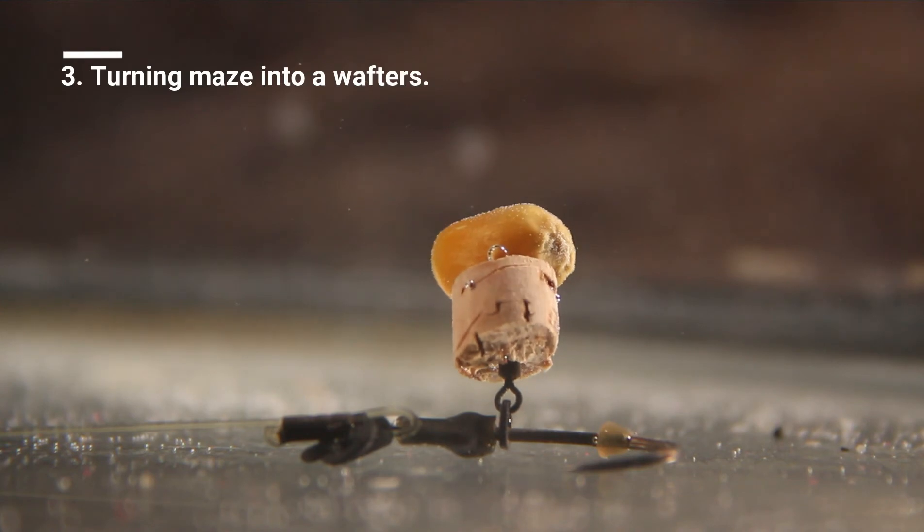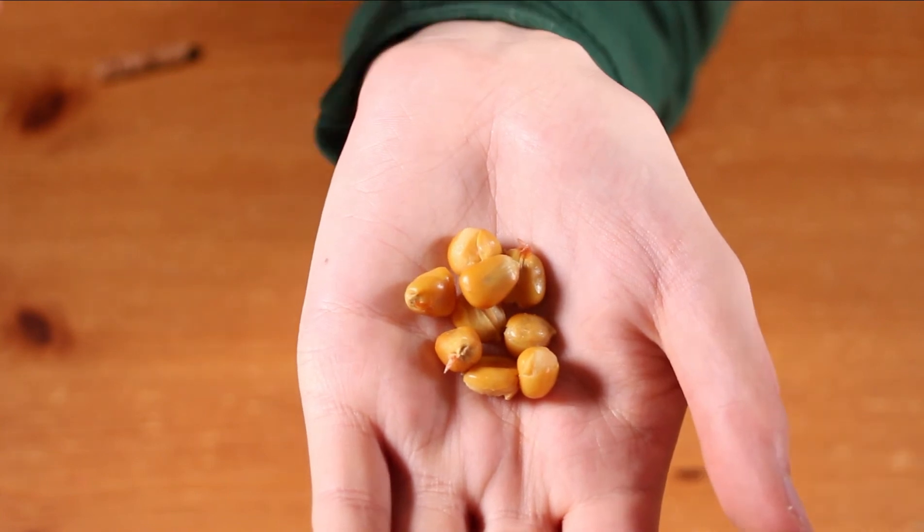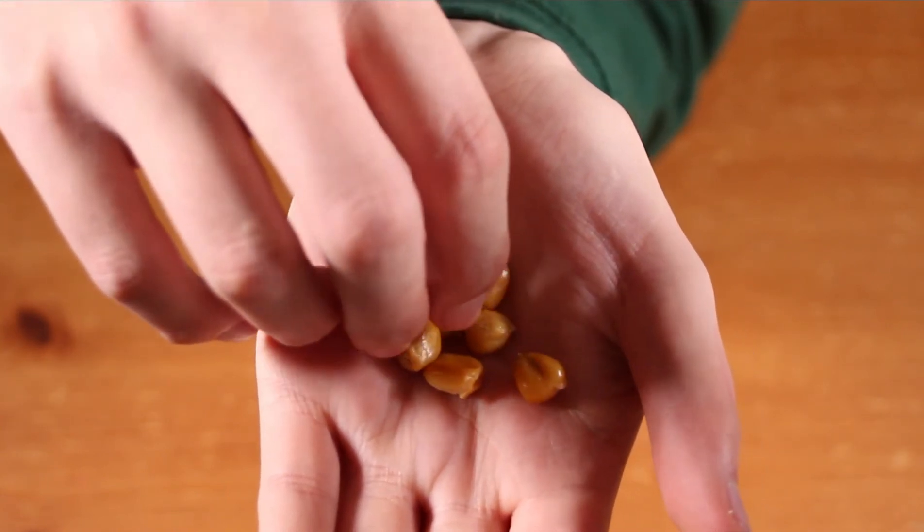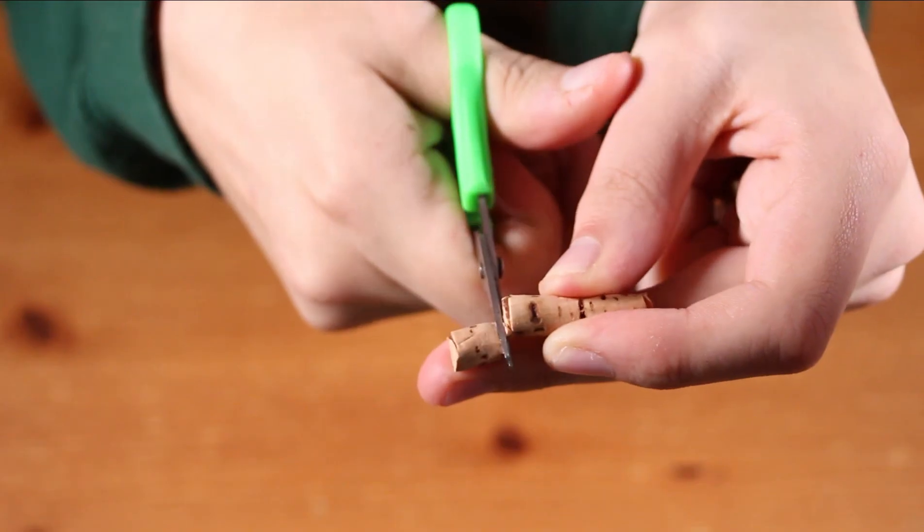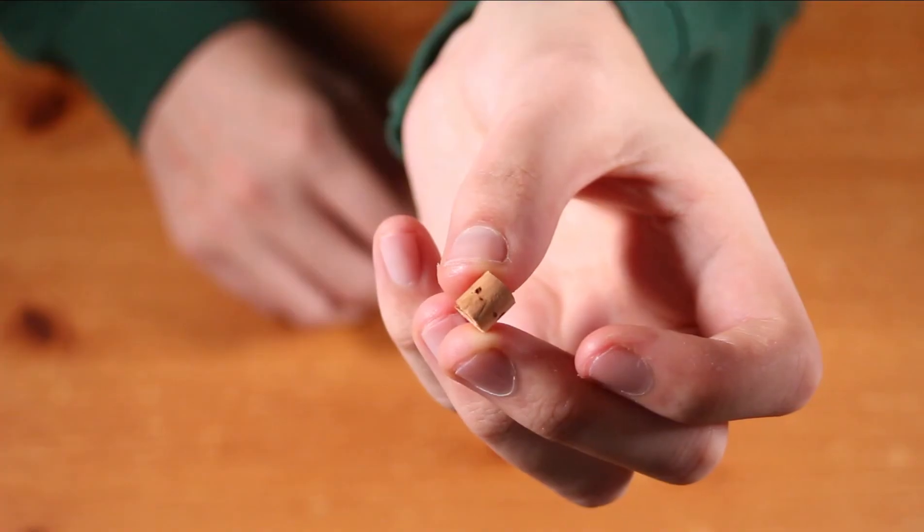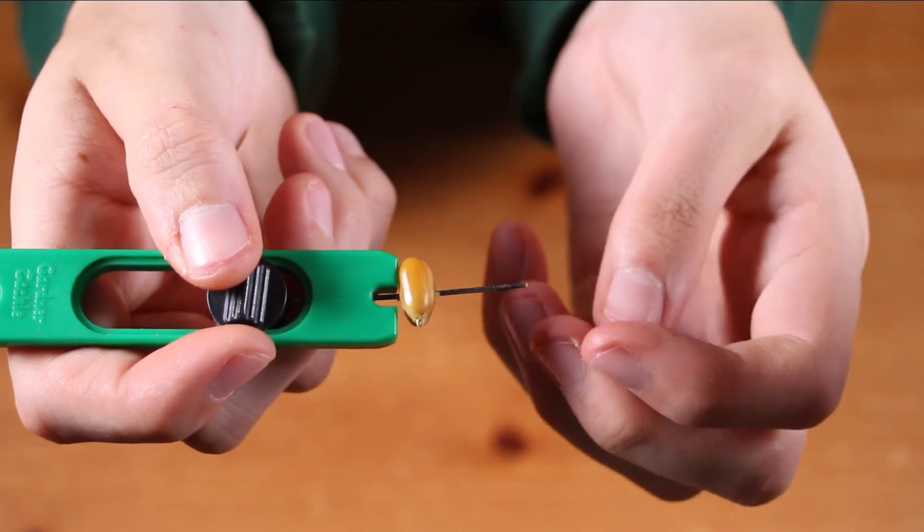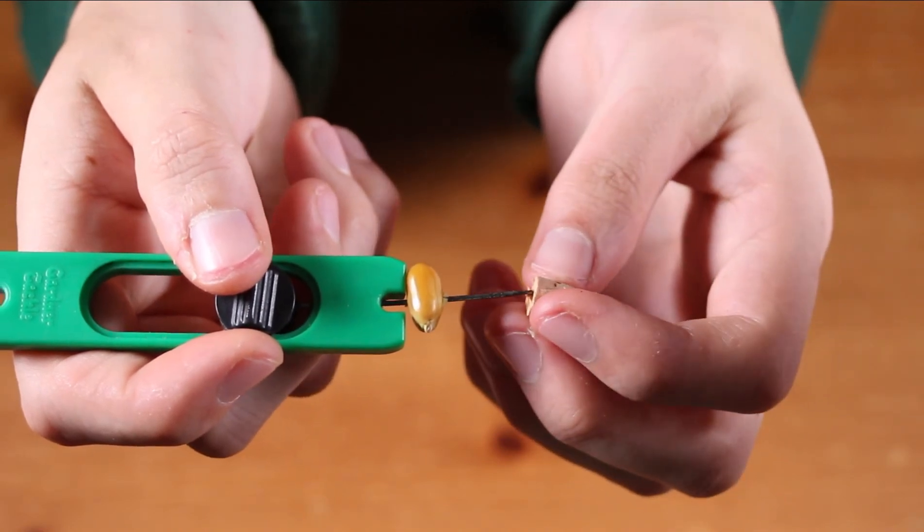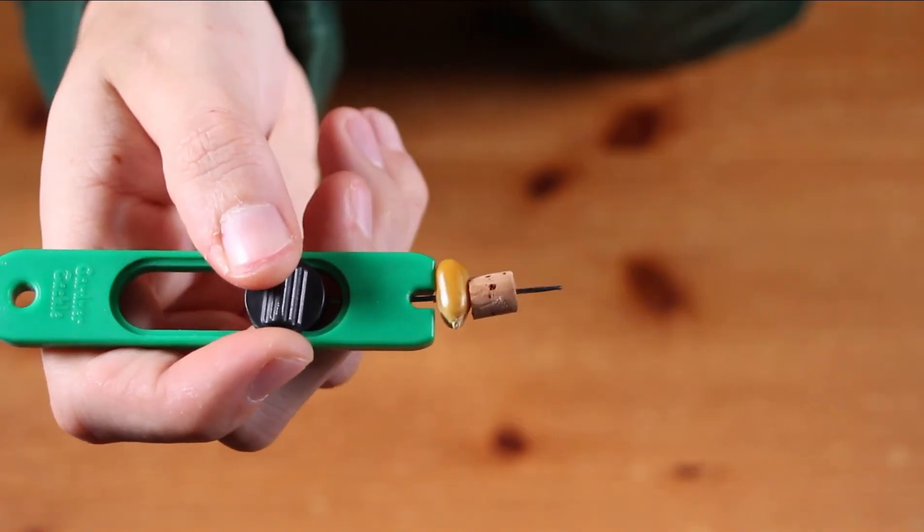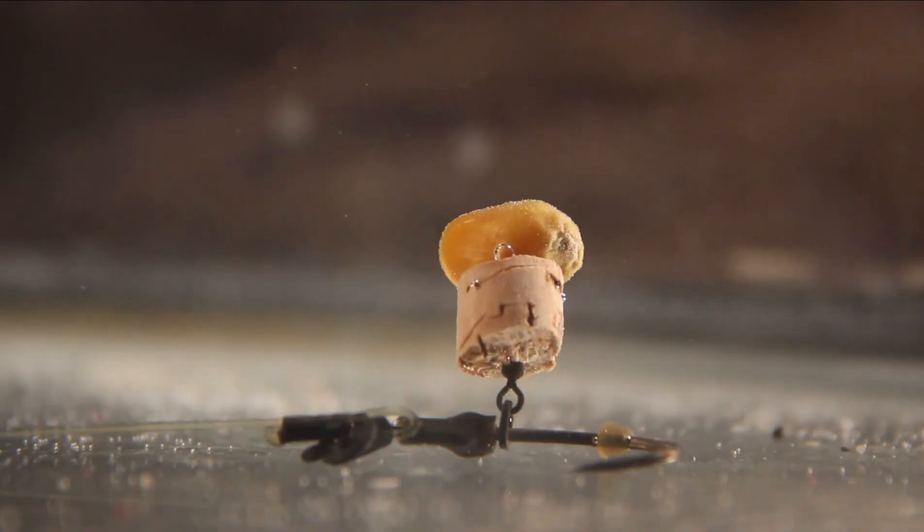Turning your maize into a wafter. First pick your preferred piece of maize. Then cut off half an inch from your cork stick. Next thread your piece of maize onto a baiting needle, followed by the piece of cork. And then attach it to the Ronny rig. And there you have a maize wafter.